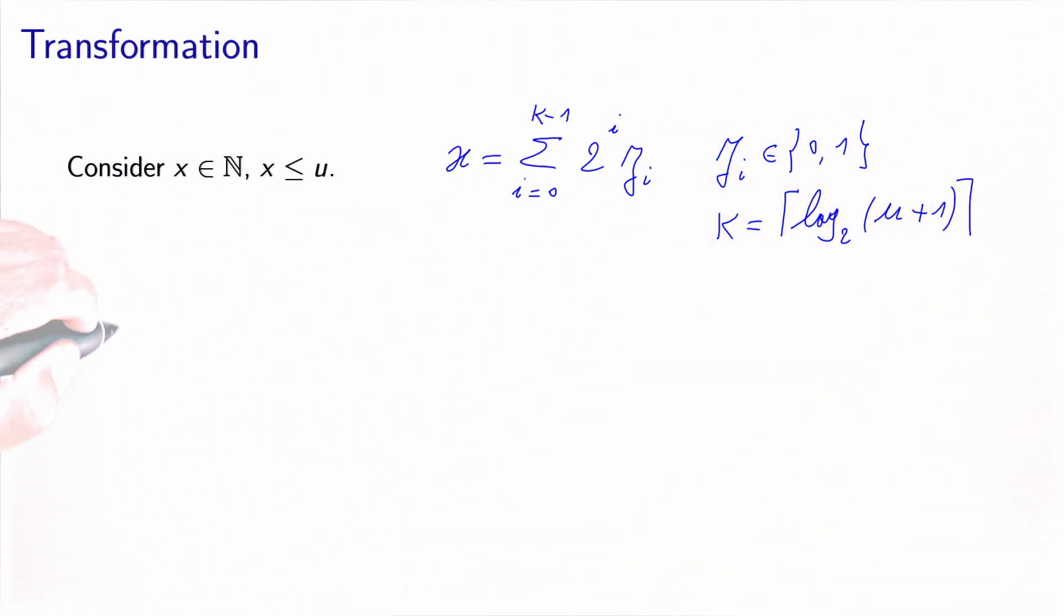Let's take an example with u equals 5. In this case k equals 3. And we write x as z0 plus 2 z1 plus 4 z2.